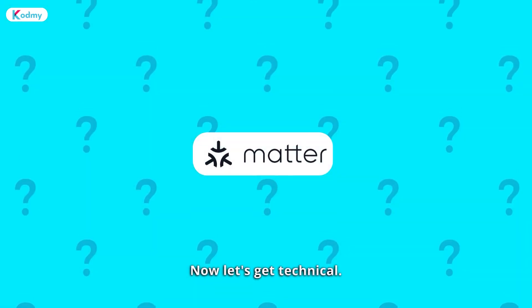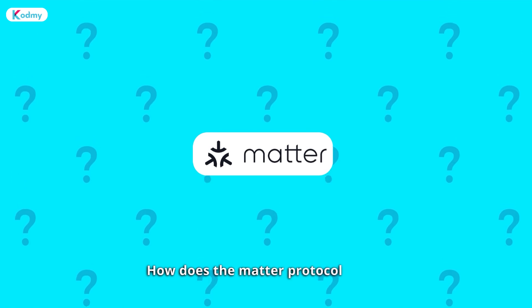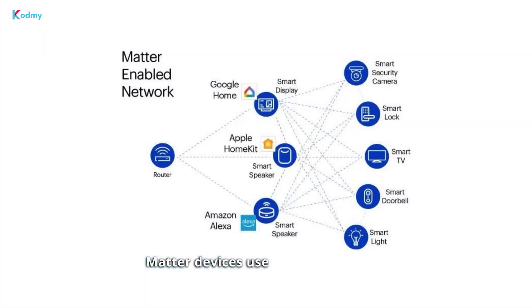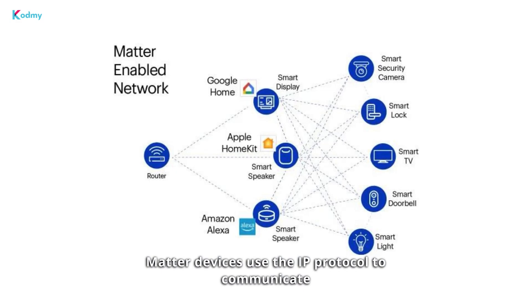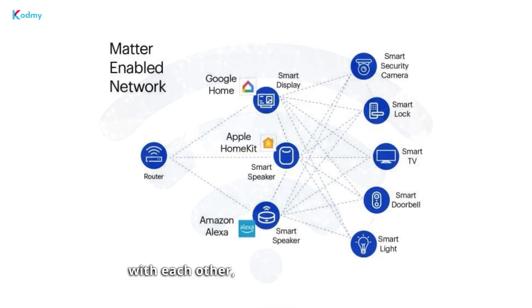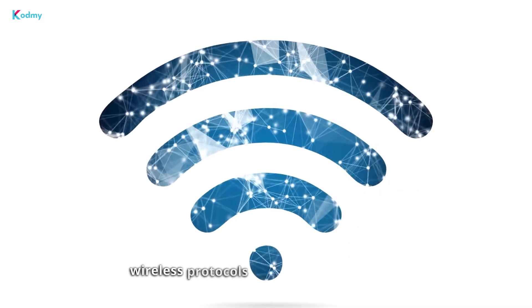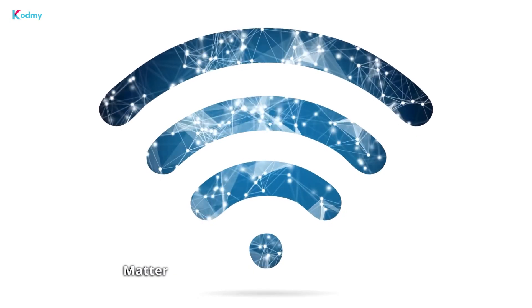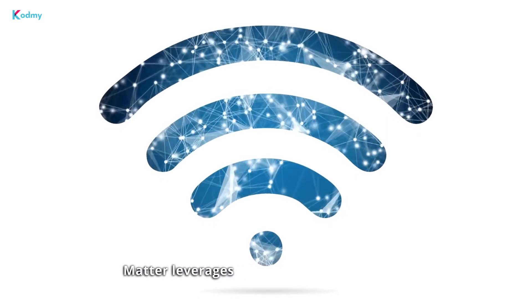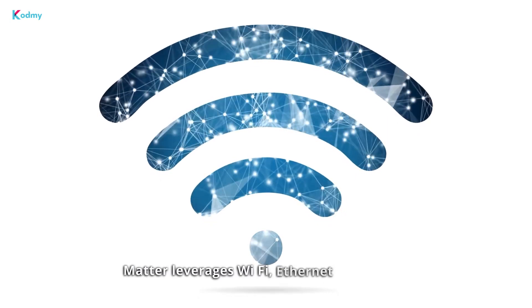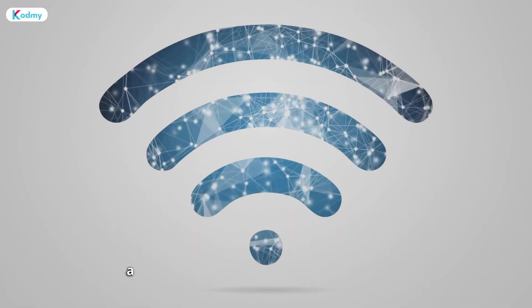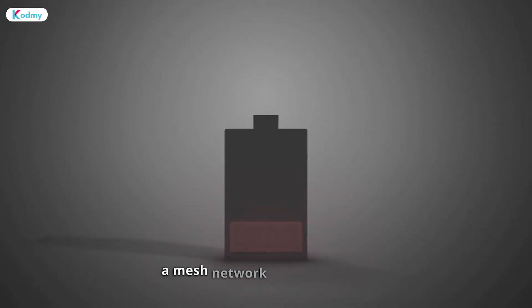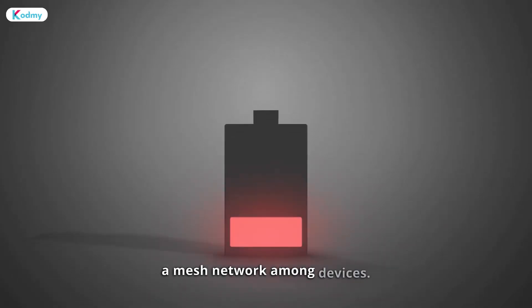Let's get technical. How does the Matter protocol work? Matter devices use the IP protocol to communicate with each other, even if they use different wireless protocols such as ZigBee or Wi-Fi. Matter leverages Wi-Fi, Ethernet, and Thread — a low-power smart home protocol forming a mesh network among devices.